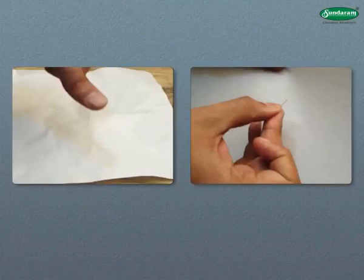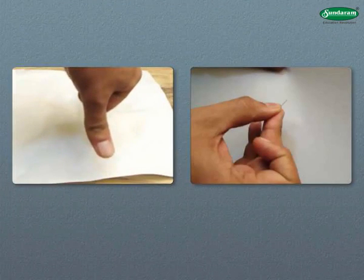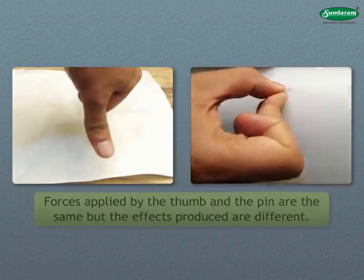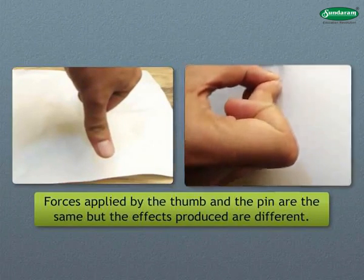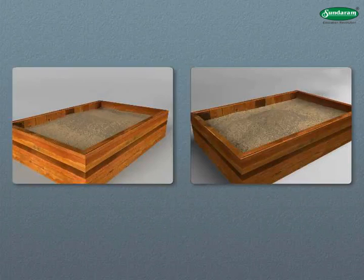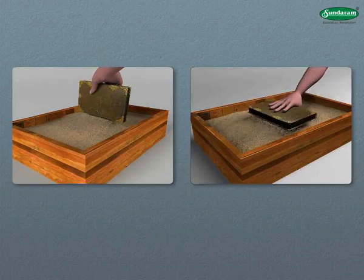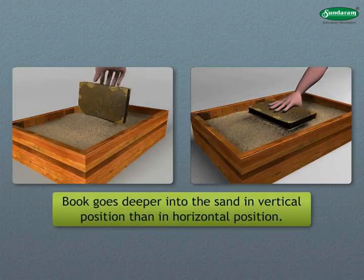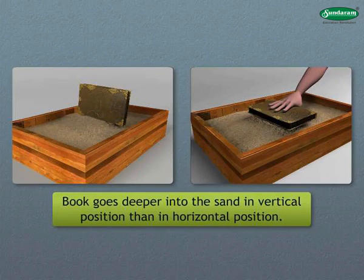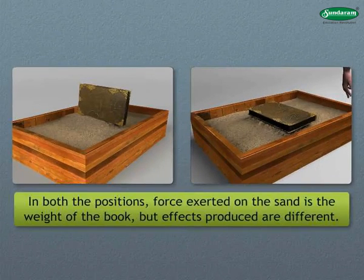There is a difference when you press your thumb against a piece of paper and when you press the pointed end of a pin against the same piece of paper. The forces applied by the thumb and the pin are the same but the effects produced are different. Similarly, there is a difference when you keep a heavy book vertically on a sand bed and when you keep it in a horizontal position. The book goes deeper into the sand in vertical position than in horizontal position.